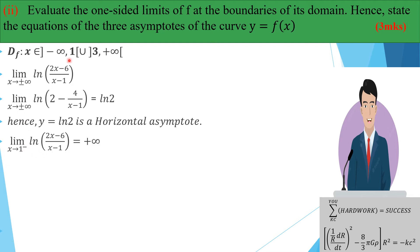Now look at the one-sided limit as x tends to 1 from below, since the function only exists to the left of 1. This limit evaluates to positive infinity, so x = 1 is a vertical asymptote. In general, if the limit as x tends to a (from either side) is ±infinity, then x = a is a vertical asymptote.